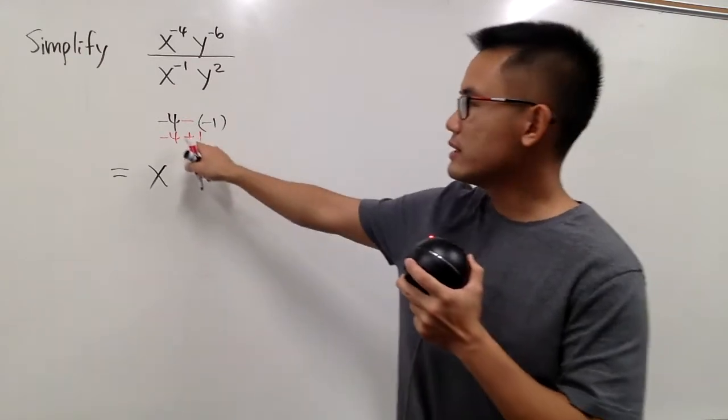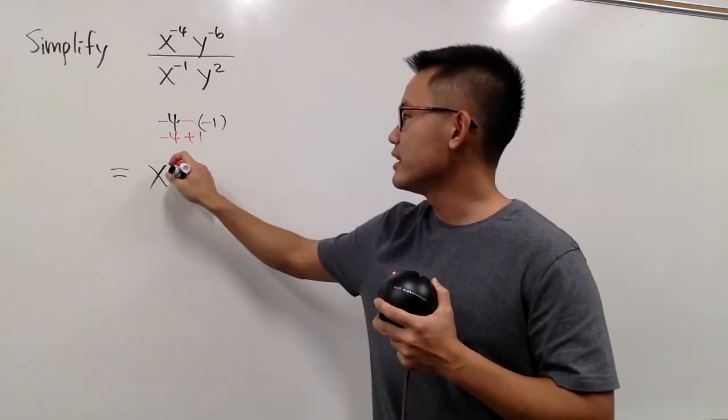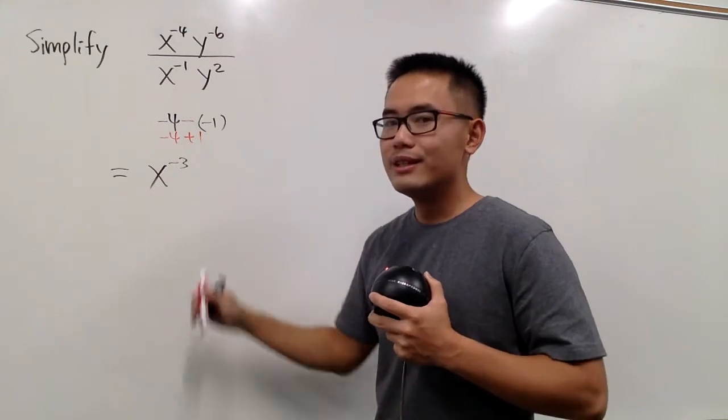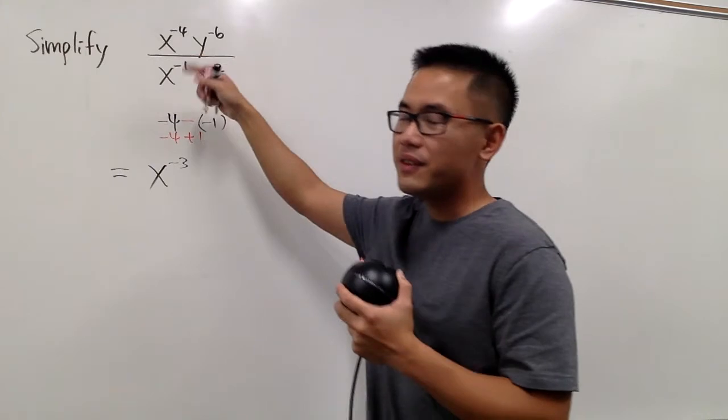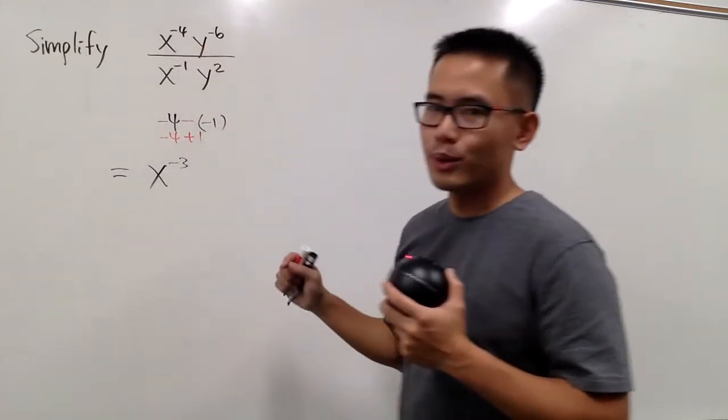And now, what's negative 4 plus 1? This is the same as negative 3. So this is how we deal with the division situation. Even though the powers are negative, you still subtract the exponents.